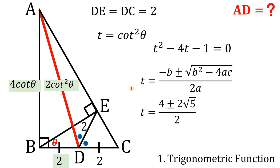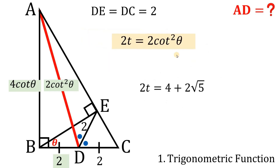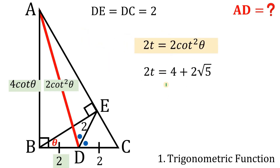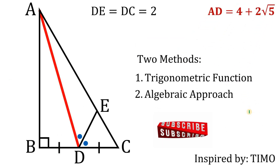Since t cannot be negative, we take t equals (4 + 2√5) / 2. We want 2t, which is 2 cotangent squared theta, so multiplying by 2 gives 2t equals 4 plus 2 times square root of 5. This is our answer using trigonometric functions.